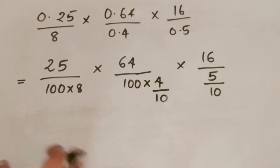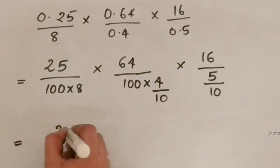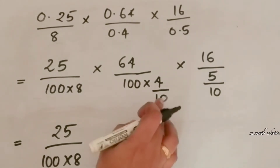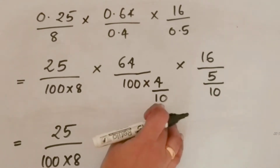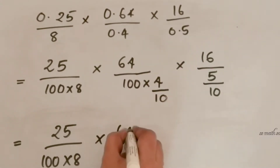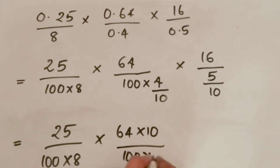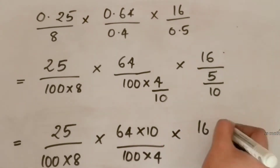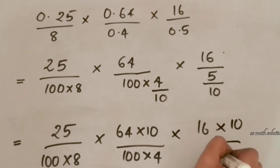Now we arrange this as: (25/100) × (64 × 10)/(100 × 4) × (16 × 10)/5. We move the 10 from dividing by 10 up to the numerator, so 64 × 10 in the numerator and 100 × 4 in the denominator. Similarly 16 × 10 in the numerator divided by 5.